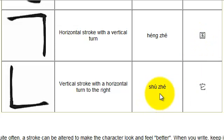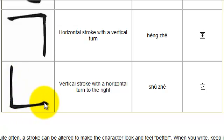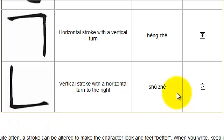Then you have the shu zhe. Shu zhe is the vertical stroke with a horizontal turn to the right. You start at the top, draw down and then to the right. Here's an example of shu zhe in use.